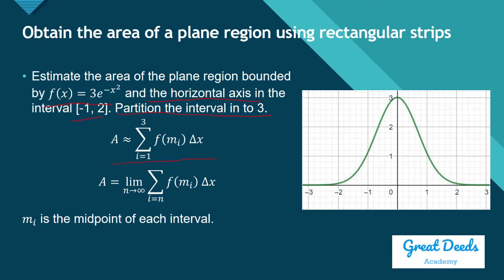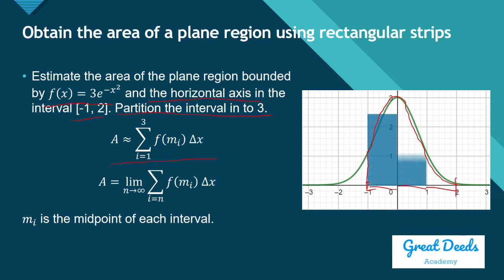We shall obtain the area using a sum. This is the graph of f of x equals 3 times e to the negative x squared. We will get the area of the region bounded by the curve from negative 1 to 2, bounded above by this curve. We will partition it into 3 intervals: from negative 1 to 0, 0 to 1, and 1 to 2. We will lay down strips of rectangles, giving us our initial estimate for the area of that plane region.